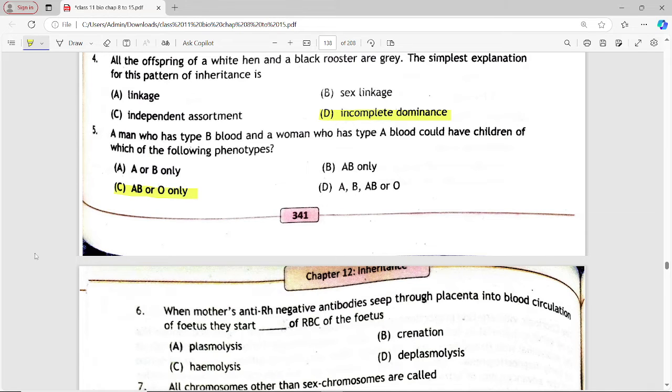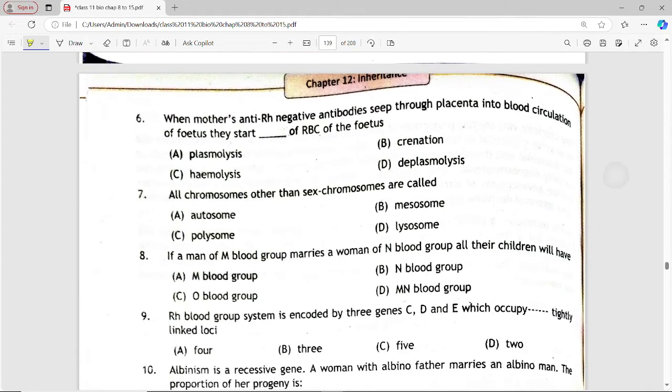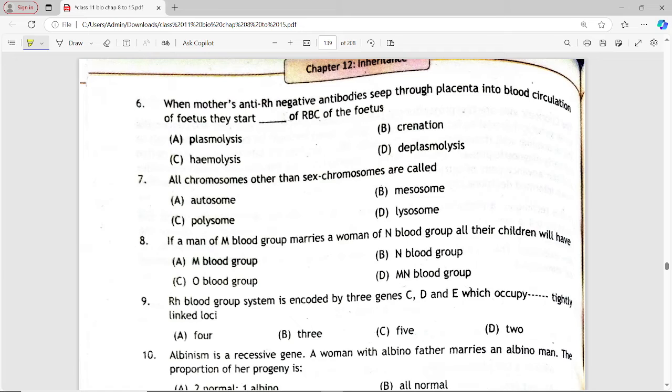Next: When mother's anti-RH antibodies seep through placenta into blood circulation of fetus, they start [blank] of red blood cells of fetus. Options are: plasmolysis, crenation, hemolysis, deplasmolysis. Answer is option C, hemolysis.